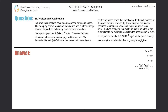Number 56: professional application — ion propulsion rockets have been proposed for use in space. They employ atomic ionization techniques and nuclear energy sources to produce extremely high exhaust velocities, perhaps as great as 8 times 10 to the 6 meters per second. These techniques allow a much more favorable payload-to-fuel ratio. For part A, calculate the increase in velocity of a 20,000 kilogram space probe that expels only 40 kilograms of its mass at the given exhaust velocity.